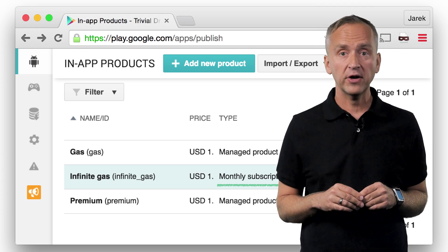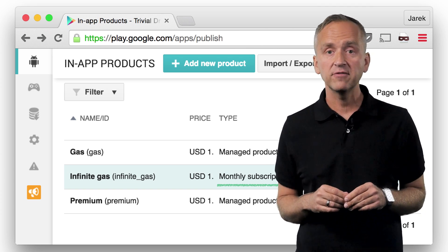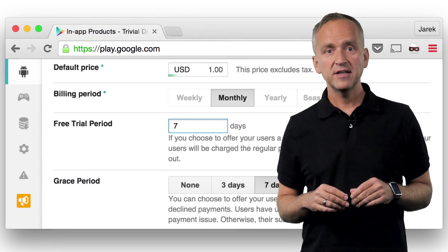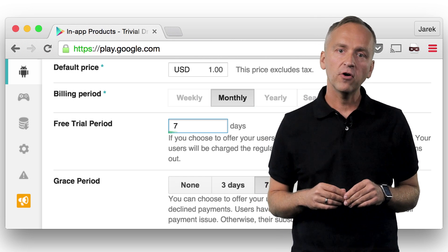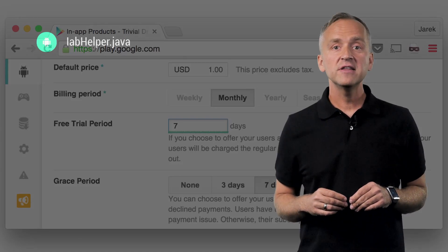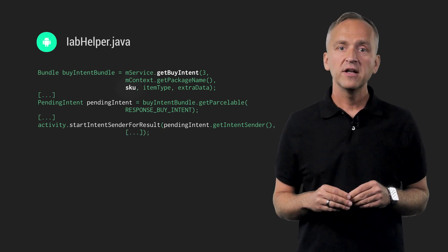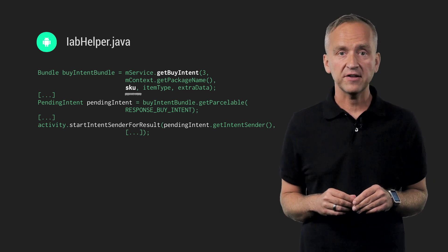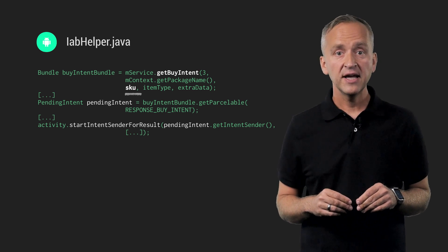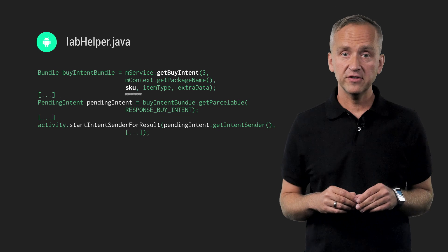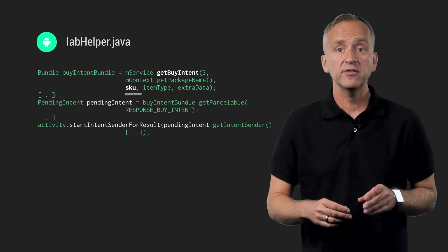To implement subscriptions, you need to first configure a new product in the Google Play Developer Console. Configure the name and the ID, the price, billing period, and even offer a free trial. Then in the app you kick off the purchase flow like in the gas example. This time, the SKU ID is infinite gas. Trivial Drive constructs a Buy Pending Intent, starts it, and then processes the response in the handleActivityResult method. And voila, we're done with subscriptions.